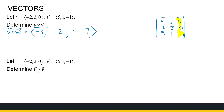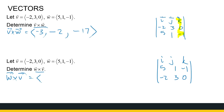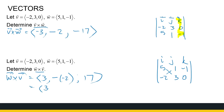Now let's compute W cross V to compare. We write I, J, K, then W: 5, 1, minus 1, and V: minus 2, 3, 0. Ignoring the first column: 1 times 0 minus minus 3 times minus 1 gives 0 minus minus 3, so plus 3. Ignoring the middle column: 5 times 0 is 0, minus minus 2 times minus 1 is minus 2, giving 0 minus 2 equals minus 2; with the minus sign that's plus 2. Ignoring the last column: 15 minus minus 2 equals 17. So W cross V equals (3, 2, 17).